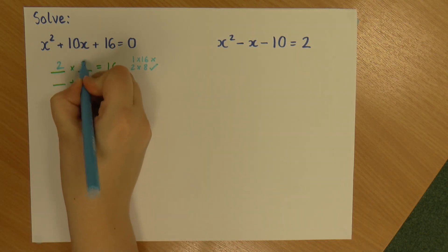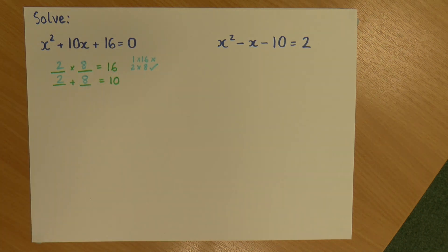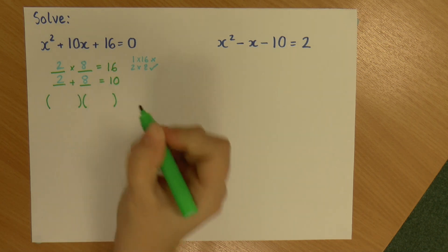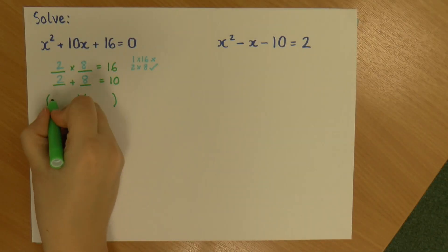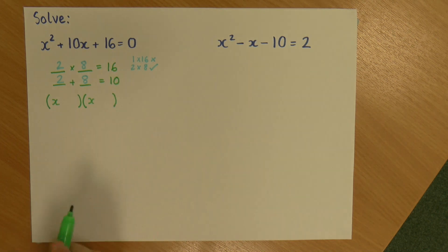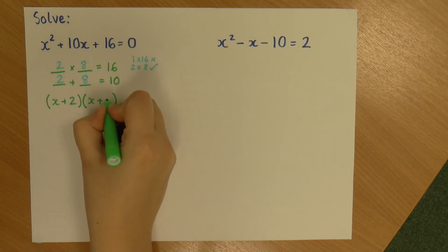So 2 times 8 is 16, 2 plus 8 is 10. And so I can put those in the factorise format, which always looks like this. We always have an x in each, so we've got x plus 2 and x plus 8.